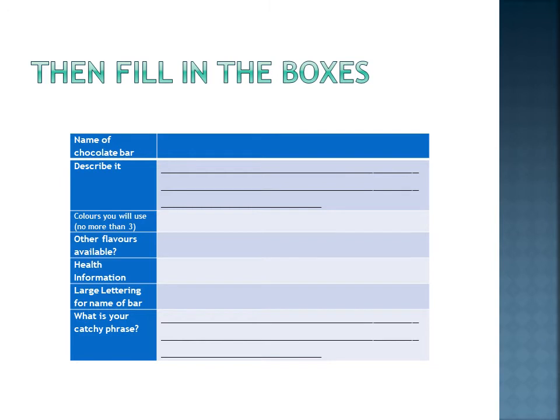Health information — for example, does it contain nuts? It being Willy Wonka, does it contain gunpowder, or something other equally strange? And large lettering for the name of the bar — maybe try and copy your lettering onto the thing. What is your catchy phrase? What's the phrase that's going to get people remembering your bar of chocolate and wanting to buy it? So that's what you fill in once you've done your design.